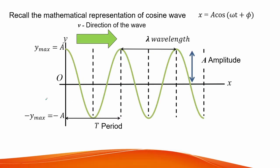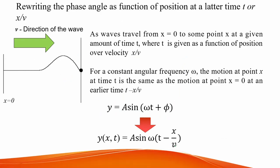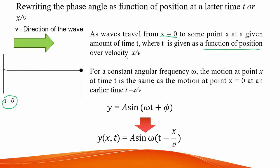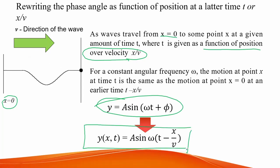We see the graphical representation of displacement x as a function of cosine. One complete cycle is one rotation shown in wave form. As waves travel from a starting position with x set as origin to some point x at a given time t, where t is a function of position over velocity, we can rewrite the wave function as a function of position. This occurs when there is a constant angular frequency, such that the motion at point x at time t equals the motion at x equals zero at an earlier time t minus x over v.